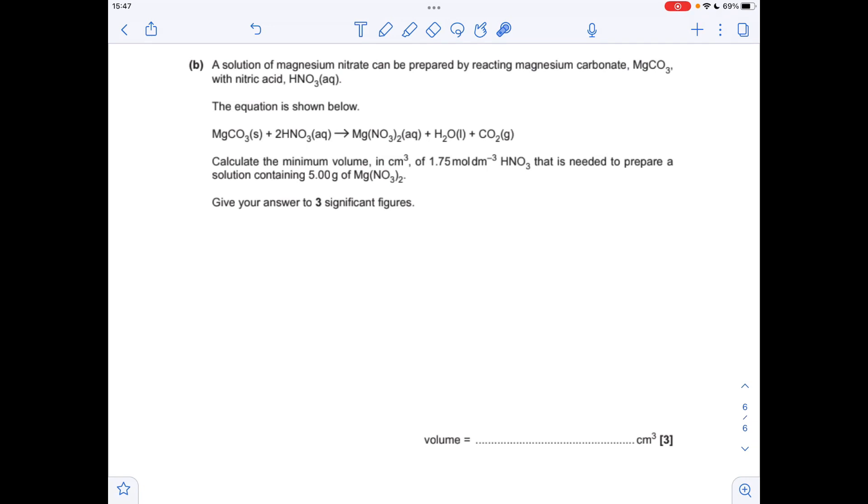And finally this calculation. The first thing I'm going to do is work out how many moles of this magnesium nitrate there are in 5 grams. It's just mass over MR. The MR is coming out at 148.3, so we've got 0.0337 moles.